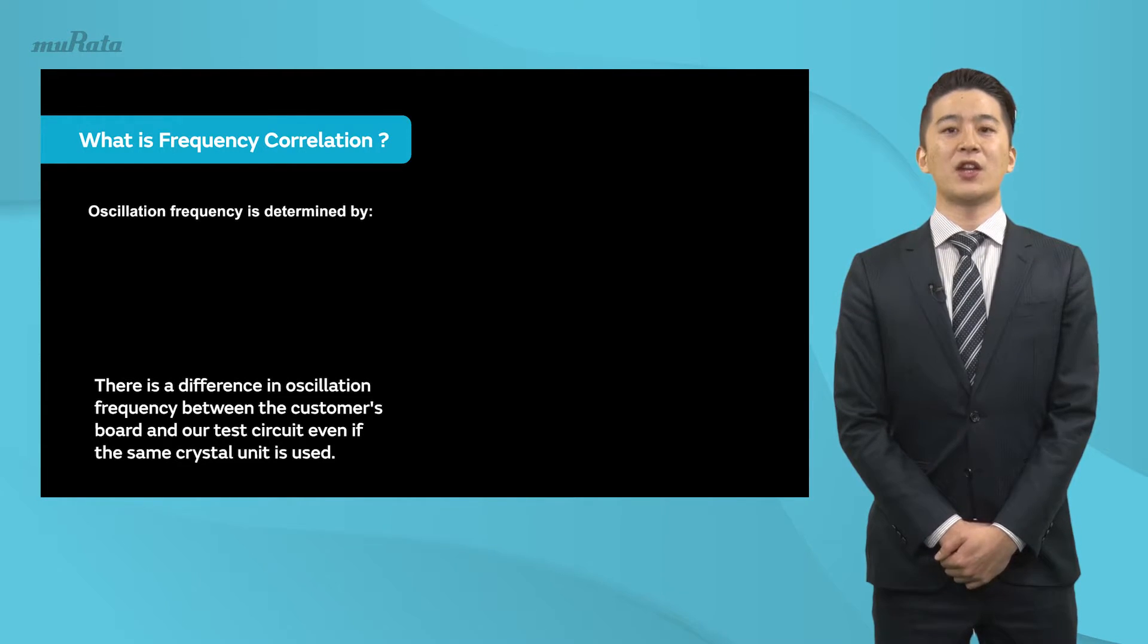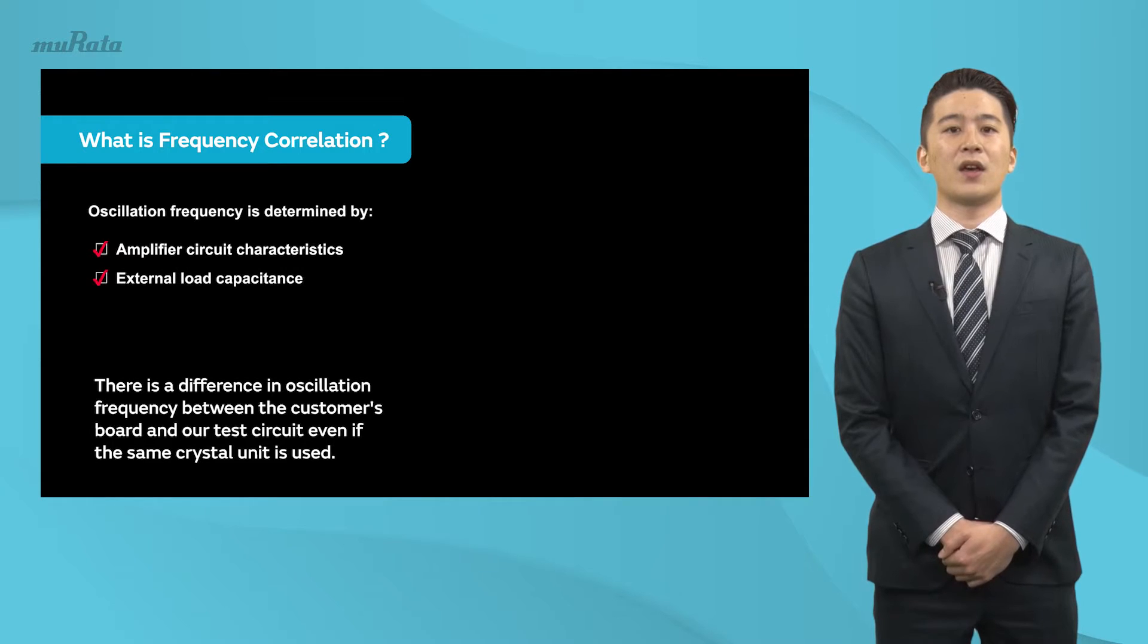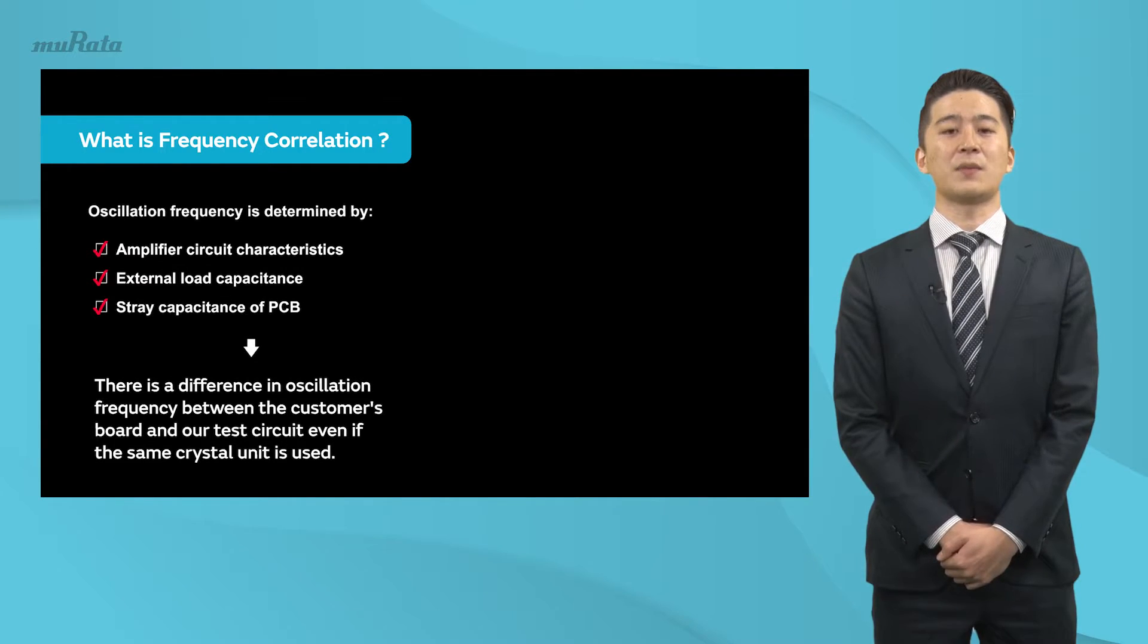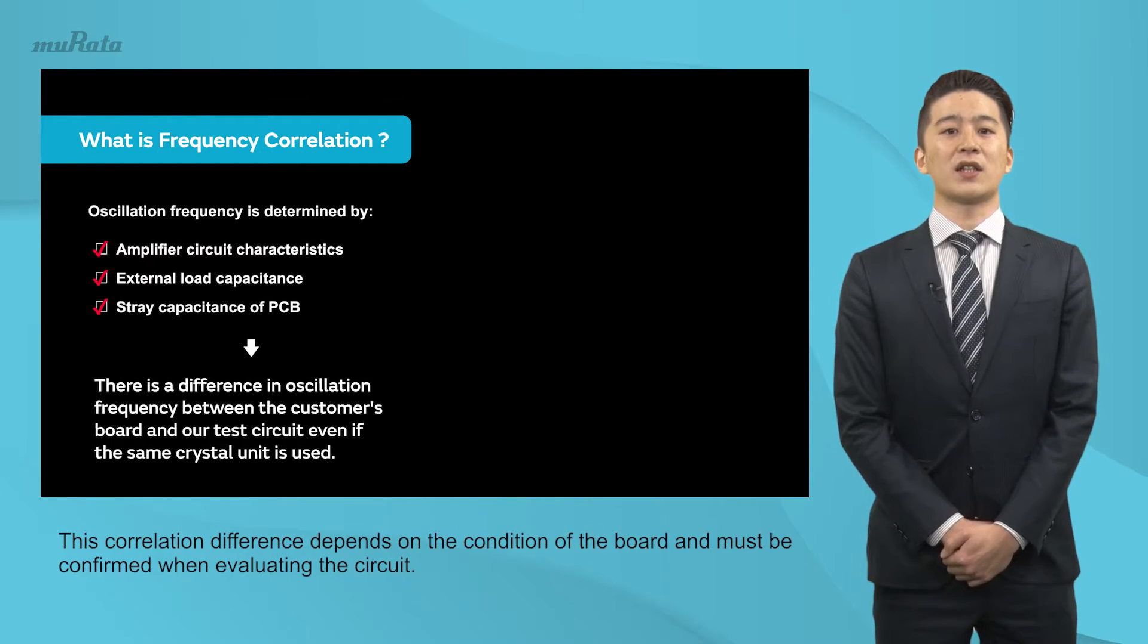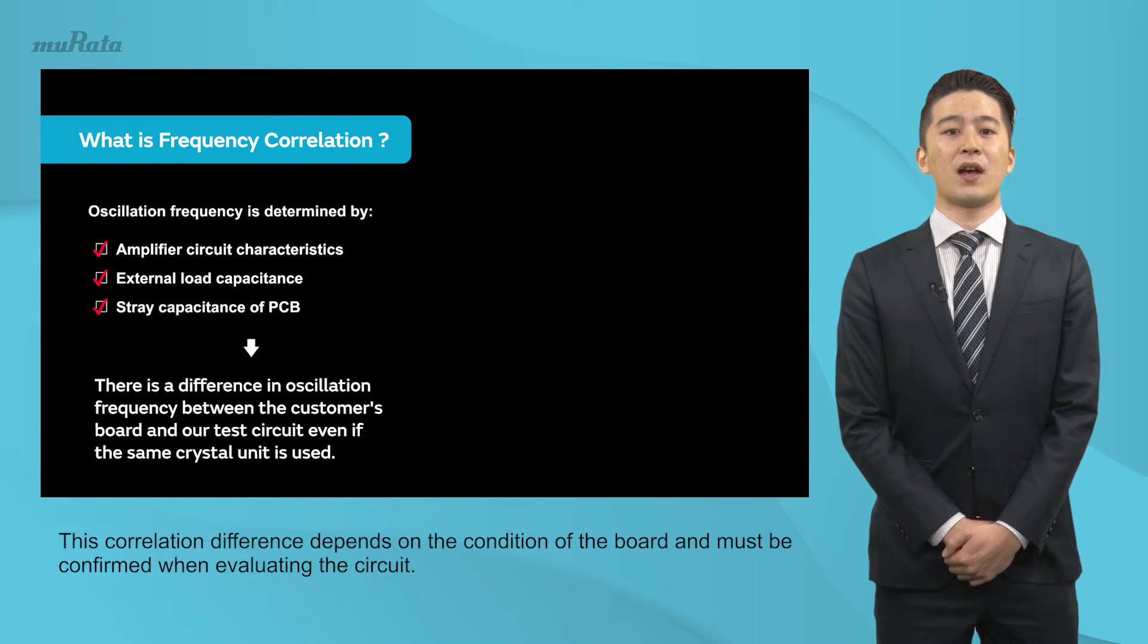The actual oscillation frequency is affected by the characteristics of the amplifier circuit, external load capacitance, and stray capacitance of the mounting board. The frequency measured on the mounting board may differ from the frequency measured on our test circuit. This correlation difference depends on the condition of the board and must be confirmed when evaluating the circuit.